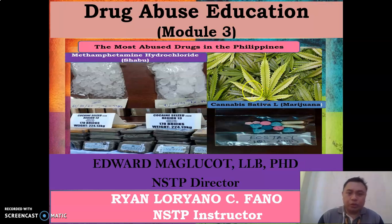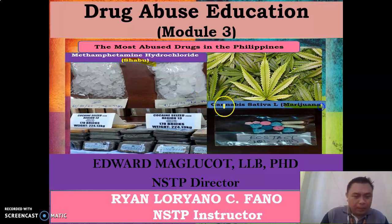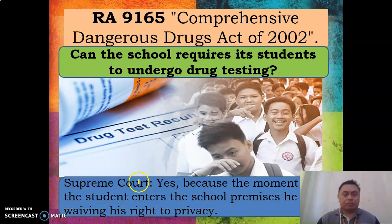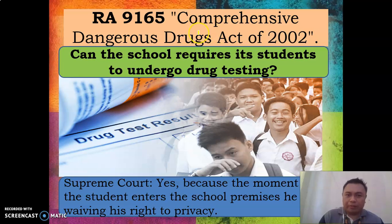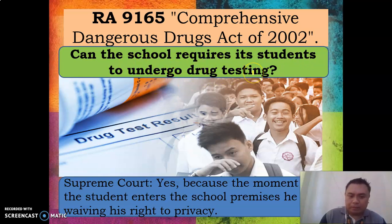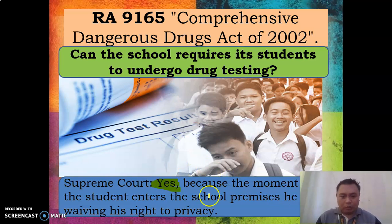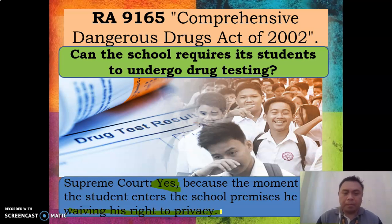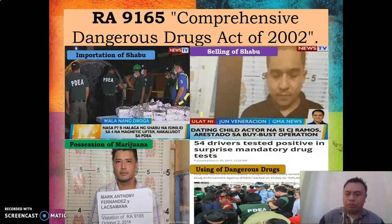Module 3 covers drug abuse education. The most abused drugs in the Philippines are: methamphetamine hydrochloride (shabu), cannabis sativa L (marijuana), cocaine, and ecstasy. The primary law on drug control is Republic Act 9165, or the Comprehensive Dangerous Drugs Act of 2002. Can a school require students to undergo drug testing? According to the Supreme Court, yes — the moment a student enters school premises, they waive their right to privacy.